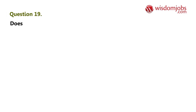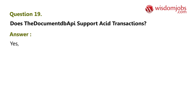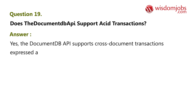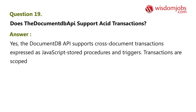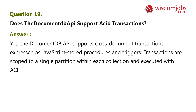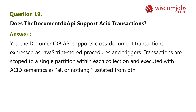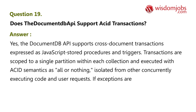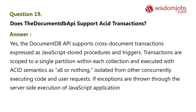Question 19: Does the Document DB API support ACID transactions? Answer: Yes. The Document DB API supports cross-document transactions expressed as JavaScript stored procedures and triggers. Transactions are scoped to a single partition within each collection and executed with ACID semantics as all-or-nothing, isolated from other concurrently executing code and user requests. If exceptions are thrown through the server-side execution of JavaScript application code, the entire transaction is rolled back.